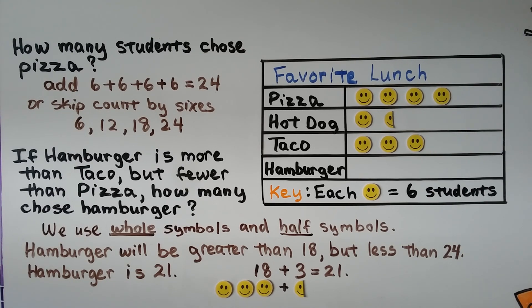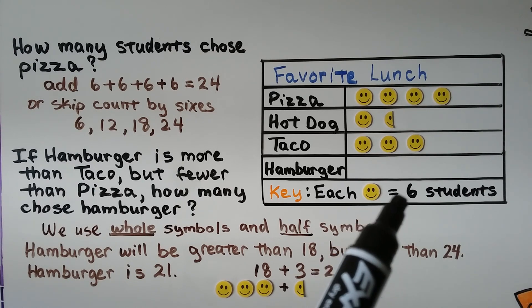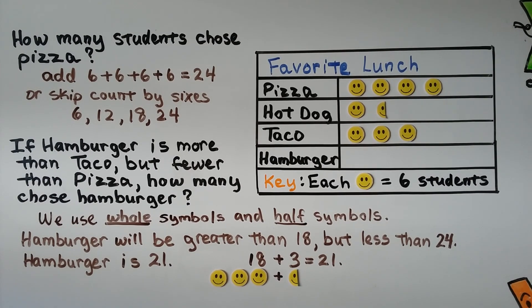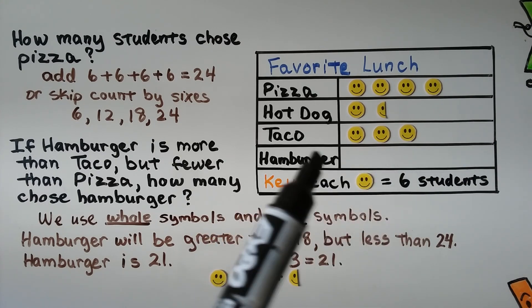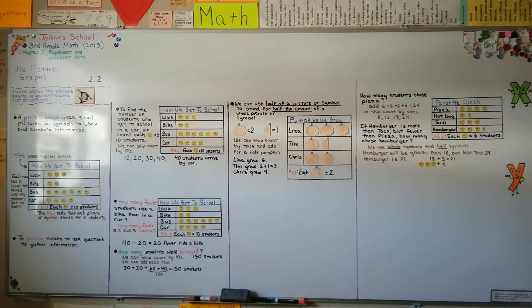We can easily see which is more or less to compare amounts. The key for each picture graph applies to that particular graph — it could be equal to ten, five, two, four, or in this one, six. We can use whole symbols or half symbols, and each word in the title is a capital letter. We can finish this picture graph by putting three and a half symbols for hamburger — now it's greater than eighteen but less than twenty-four. In our next lesson, 2.3, we're going to make picture graphs.